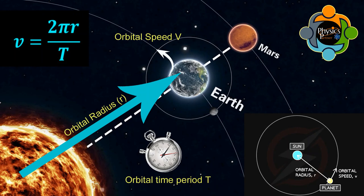You can see the equation here, which is v equals 2πr over T, whereas v is orbital speed in meters per second, r is average radius of the orbit in meters.